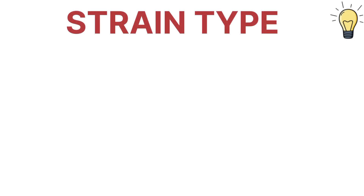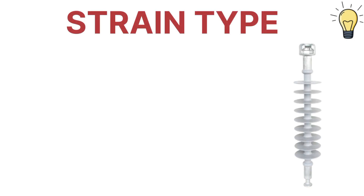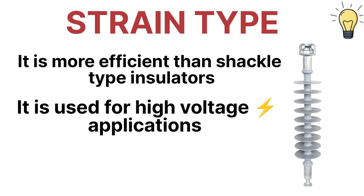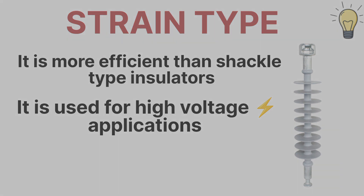The strain type insulator is more efficient than the shackle type insulator. It replaces the shackle type insulator and can be used for more than 11 kV. These are the four insulator types and their uses.